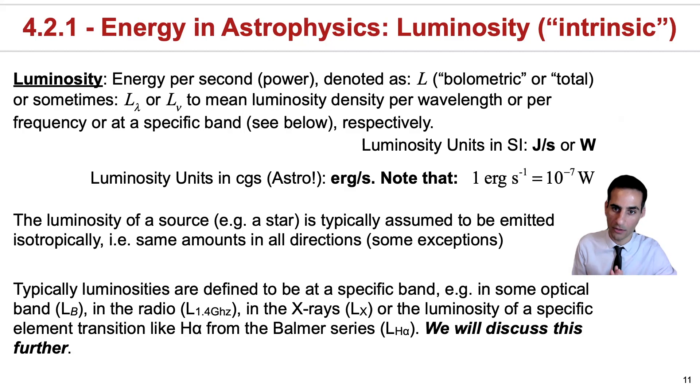And as I've already mentioned, sometimes luminosities will be for a specific band, such as in the blue or B bands, or in the radio at a specific frequency like 1.4 gigahertz, or in the X-ray where you denote it with an X, or perhaps an emission line such as H alpha. But we will discuss this further.